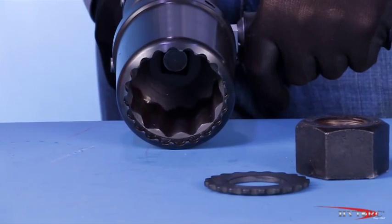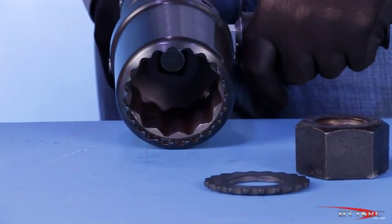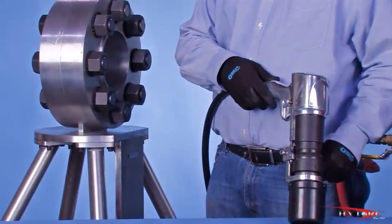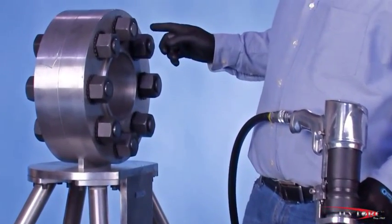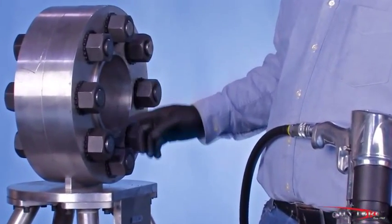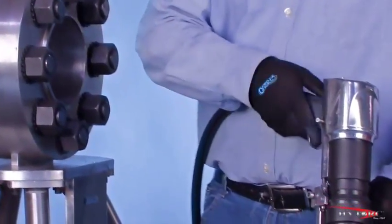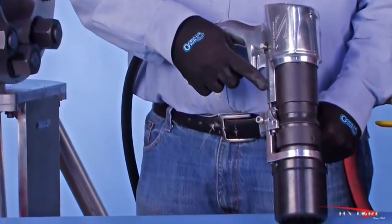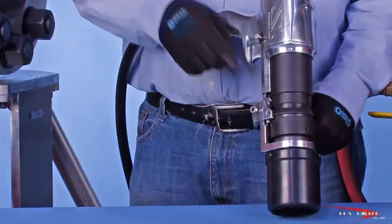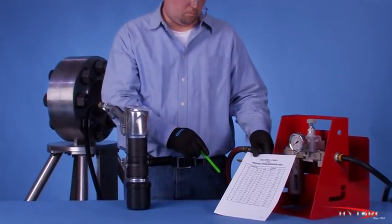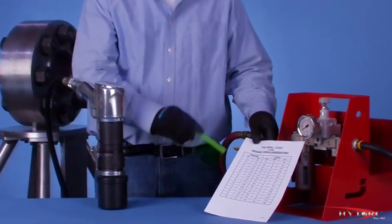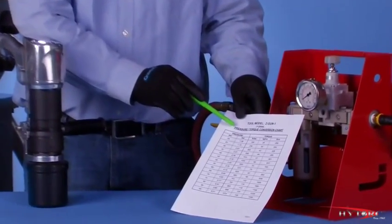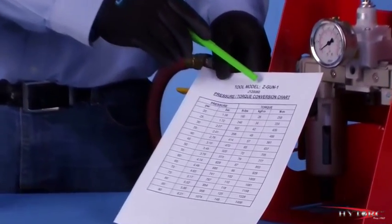Now let's put the system into action and see how it works. Let's suppose that the job at hand is to tighten these inch and a half studs with two and three eighths inch nuts to 520 foot-pounds of torque using the dual-speed Z-Gun 1. Since the turning force of the tool is determined by the air pressure supplied, we must consult the pressure to torque conversion chart for our specific tool to find out how much pressure to apply.